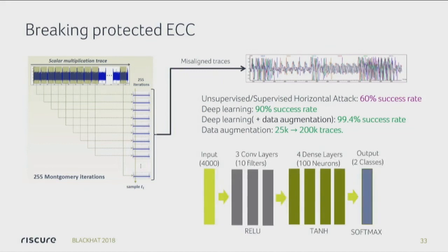This was quite a cool result because we've now done this on AES and on ECC, and on ECC we have to be more accurate, so that's also cool. The network was bigger than we've used before — three convolutional layers and four dense layers of 100 neurons. But really, if you look at classifying cat pictures versus this, this is not a very big network. So I can still do this on my poor CPU.